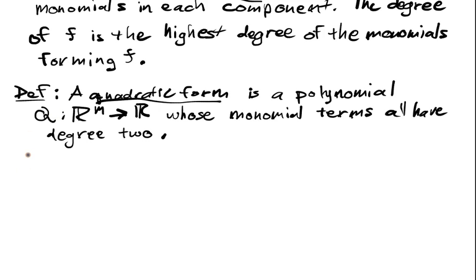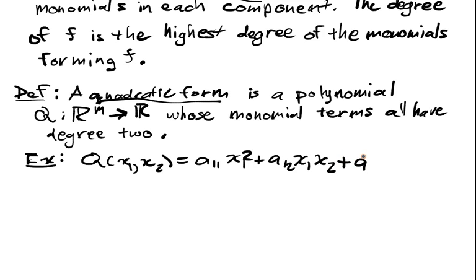What does this look like? Here's a quick example: Q of X1, X2 equals a11 X1 squared plus a12 X1 times X2 plus a22 X2 squared. This is a natural generalization of the quadratic F of X equals aX squared—the one dimensional version versus the two dimensional quadratic.